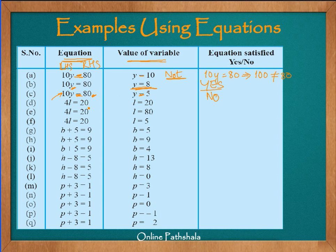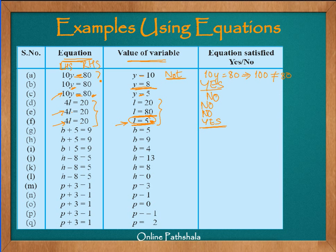We have 4L equals 20. When I put L equals 20, 4 times 20 is 80 on the left hand side — 80 is not equal to 20, so it doesn't satisfy. What if L equals 80? Then 4 times 80 is 320, which is definitely not equal to 20. So L equals 80 is not a solution either. What happens when we take L equals 5? Then 4 times 5 is 20, which equals the right hand side — so L equals 5 does satisfy the equation. For the same equation 4L equals 20, we tried 3 different values, out of which 1 was satisfied. Similarly for 10y equals 80, just 1 value satisfied: y equals 8.